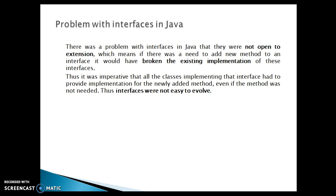Let's try to understand the prior version of JDK, meaning up to JDK 1.7. There was a problem with interfaces in Java — they were not open to extension. If there was a need to add a new method to an interface, it would have broken the existing implementation of those interfaces.